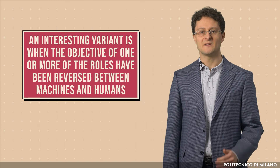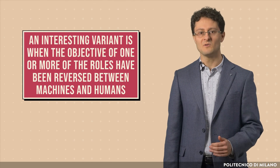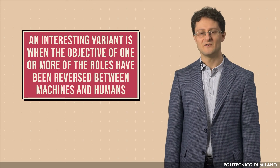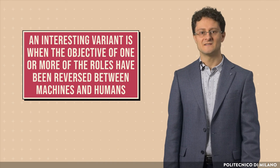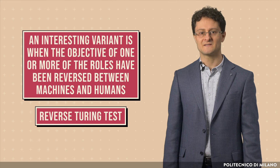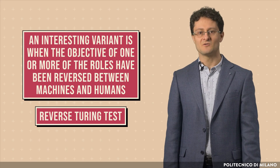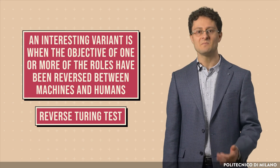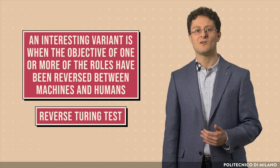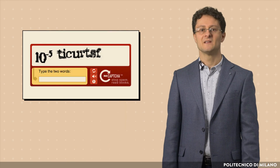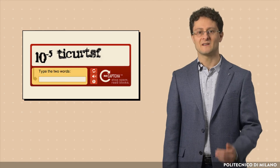Many different variants of the Turing test have been proposed during the years. An interesting variant is when the objective of one or more of the roles have been reversed between machines and humans. This variant is named the reverse Turing test. The challenge will be for the computer to be able to determine if it were interacting with a human or another computer. It is exactly what happens in CAPTCHA.